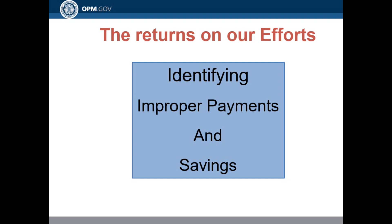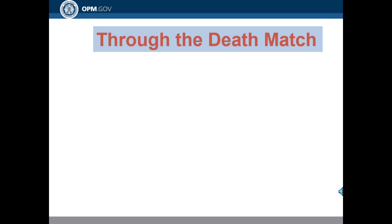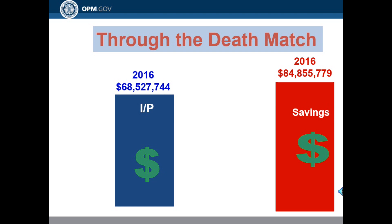The return of our efforts in identifying improper payments and savings: through the death match last year, we identified over $68 million in improper payments. Our savings last year totaled over $84 million.